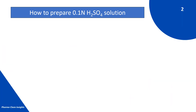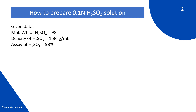How to prepare 0.1 normal H₂SO₄ solution? We have the following data: molecular weight of H₂SO₄ is 98, density of H₂SO₄ is 1.84 gram per ml, and assay of H₂SO₄ is equal to 98%. All this data you can find on the bottle of sulfuric acid. Generally, the sulfuric acid we use in the lab is 98%.